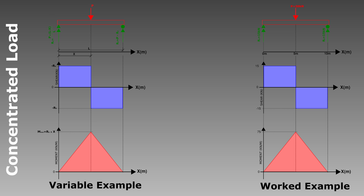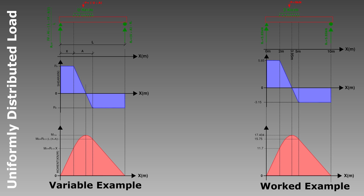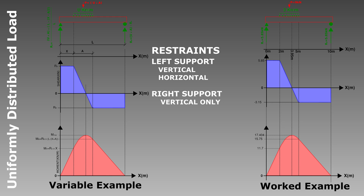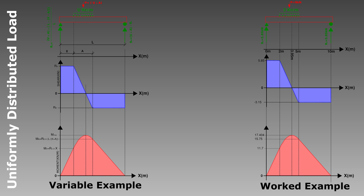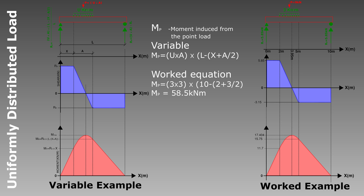Now let's look at uniformly distributed loads. We draw the same free body diagram — pin on the left, roller on the right, and a UDL starting at distance x from RA. As with the point load case, there are no horizontal reactions. To find the reactions, we take moments around RB, but with one additional step: we equate the UDL to a point load equal to u times a (where a is the length of the UDL), centered at x + a/2, at a distance of L − x − a/2 from RB.